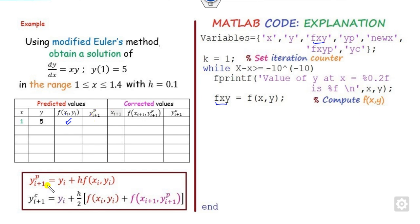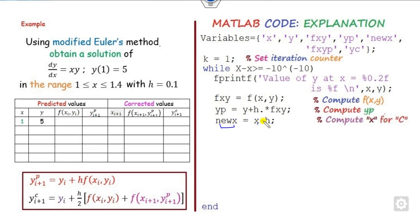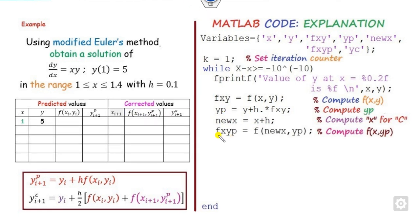Now compute the value of f(x,y) and store it as fxy. After that, compute the predictor yp: that is y plus h times f(x,y), which I store using the variable fxy. Then compute the corrected x_{i+1}, which I denote as new_x, equal to x plus h. After that, calculate f(x_{i+1}, y_p) — that is f evaluated at new_x and y_p — and store it as fxyp. The value x_{i+1} is stored as new_x, and y_{i+1,p} is stored as yp.